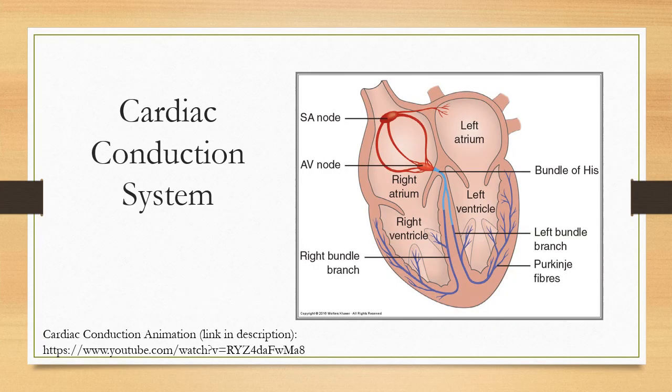For the cardiac conduction system, the SA node functions as the primary pacemaker of the heart, located at the junction of the superior vena cava and the right atrium. The SA node goes down to the AV node, then to the bundle of His, which splits into the left and right bundle branches, which then turn into the Purkinje fibers.